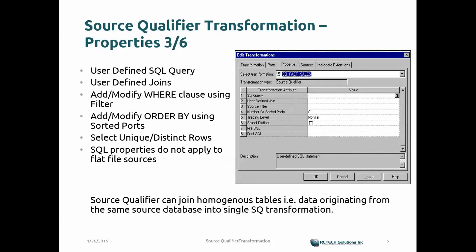Under the Properties tab, within the Transformation Attribute section, you can see several attributes: SQL Query, User Defined Joins, Source Filter, Number of Sorted Ports, Tracing Level, Select Distinct, Pre SQL, and Post SQL. That's why we call this an active transformation — we apply business rules within it that potentially alter the number of records we get from the source.